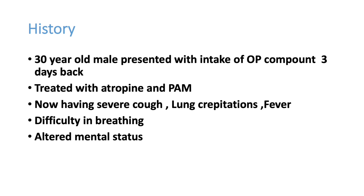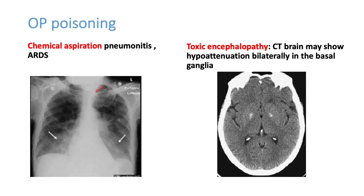He is having difficulty in breathing and altered mental status, which can be due to toxic encephalopathy or atropine itself. An X-ray was taken, showing bilateral diffuse infiltrates especially in the lower zones of the lungs, due to either aspiration pneumonia or ARDS. ARDS is a common presentation of OP poisoning.